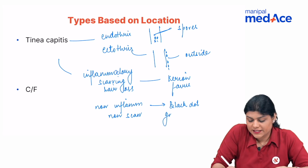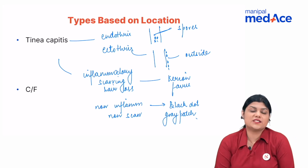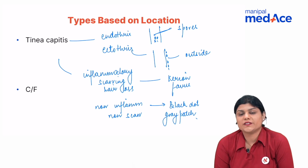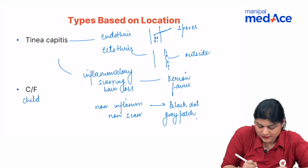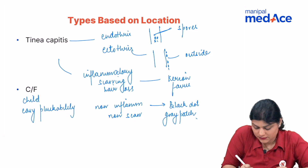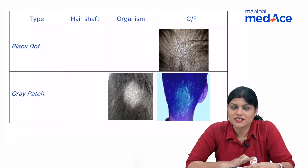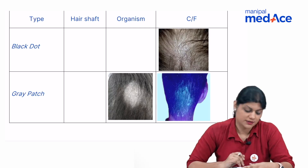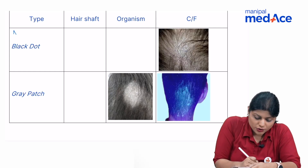Examples of inflammatory type are kerion and favours. Non-inflammatory or non-scarring hair loss includes black dot and grey patch. Clinical features include mostly a child being involved, with easy pluckability of the hair and broken hair. This is a very important topic from an exam point of view — at least a single question comes every year on tinea capitis.